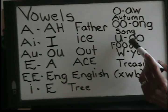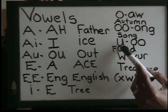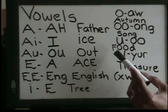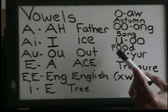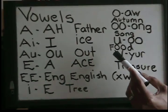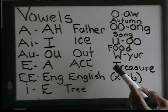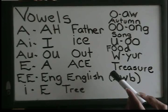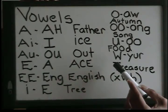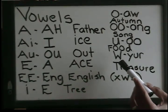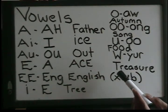The U is a WU sound, as in 'food.' And W in Hmong RPA is like a YU sound, as in the middle of 'treasure' — a YU sound.